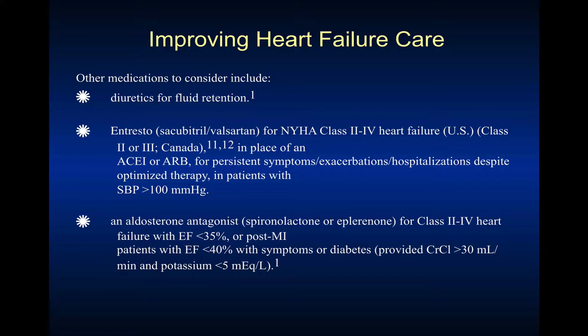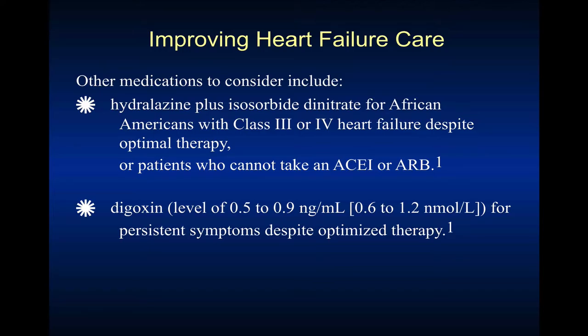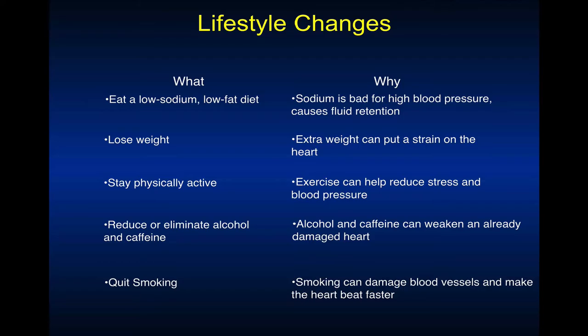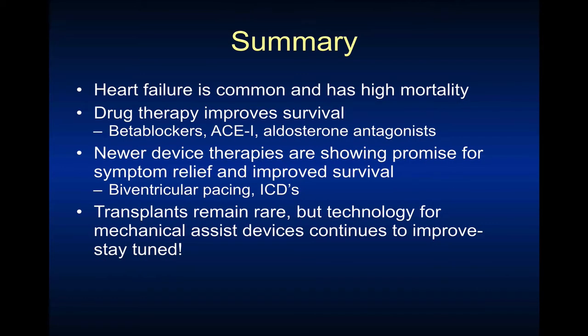Other medications to consider: diuretics for fluid retention. The newer drug Entresto, which consists of sacubitril and valsartan, is reserved for Class 3 or Class 4 heart failure — for people who have been on ACE or ARBs but still have persistent symptoms, repeated exacerbations and hospitalizations, and a systolic blood pressure of greater than 100 mmHg or higher. An aldosterone antagonist like spironolactone should be reserved for patients with heart failure with ejection fraction less than 35%, post-MI, or patients below 40% with symptoms or diabetes. We need to monitor potassium and renal function; it doesn't seem effective with creatinine clearance less than 30 mL per minute.